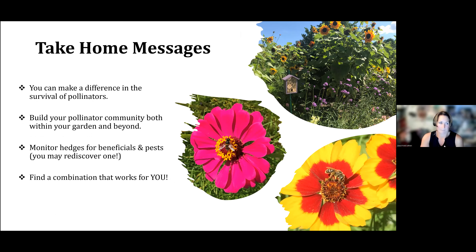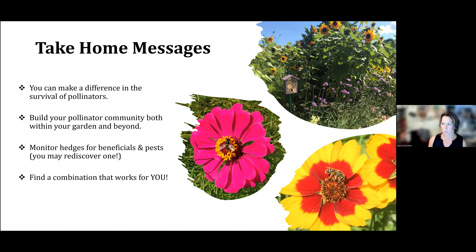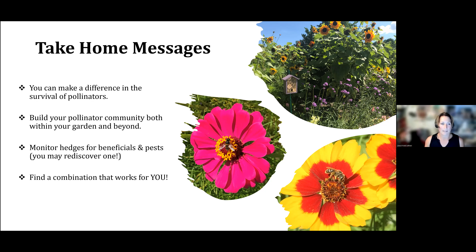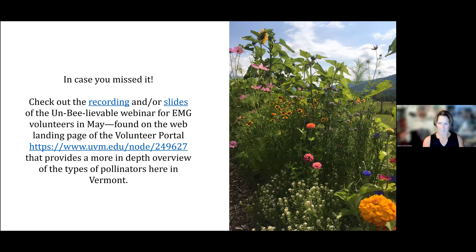The take-home message is that you can make a difference for the survival of these beneficials and build your own beneficial community within your garden and beyond. You really want to monitor these for beneficials and pests just to make sure everything's in check, and you never know when you might rediscover something. It's important to have those observations on plantings and to record them, because something that's been lost for a really long time might just pop up again as more people provide habitat to encourage them to reestablish. It can be overwhelming with all the flower choices out there, but the resources are available in the links in this presentation, covering the different bee species and other beneficials attracted.